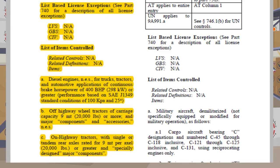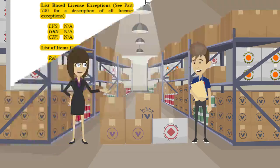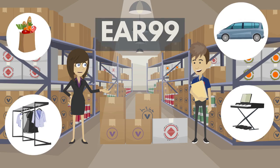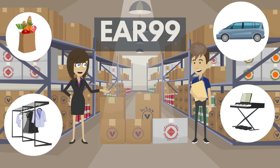Continue to check the remainder of category 9A and any other applicable categories and product groups. If your items are subject to the Export Administration Regulations but not described in the Commerce Control List, then they would be designated EAR99.